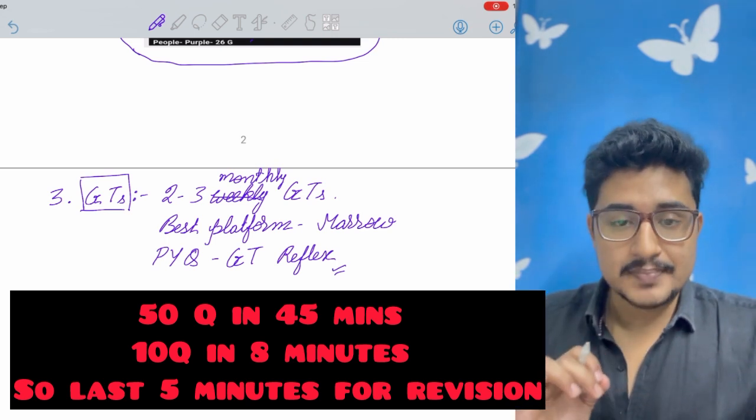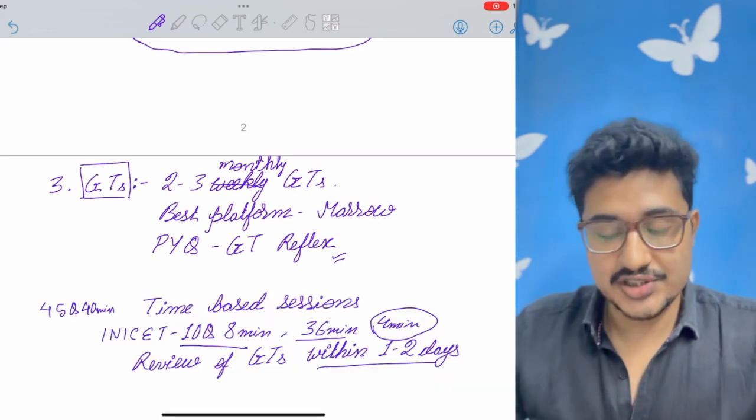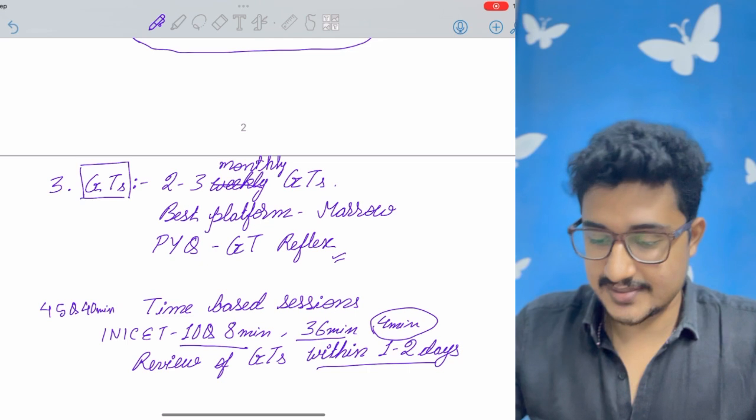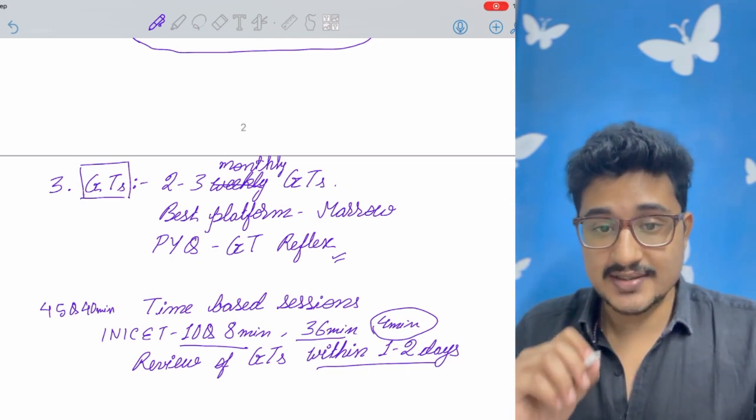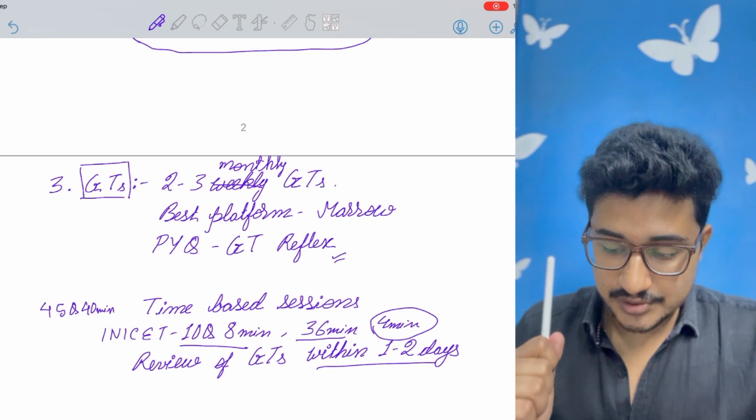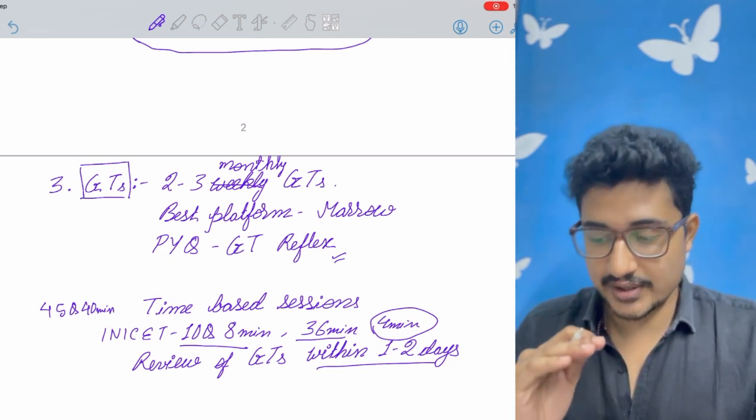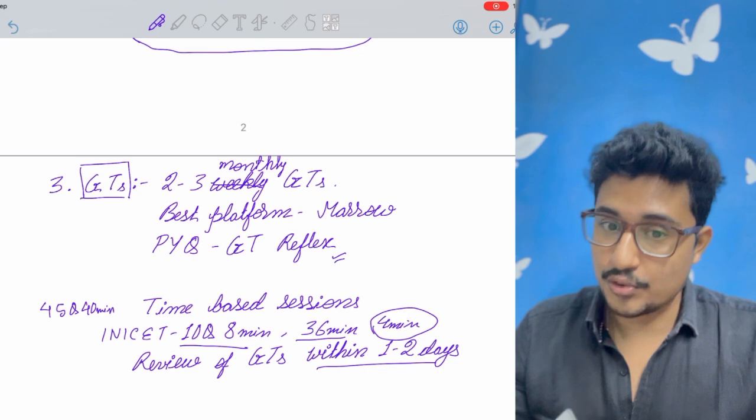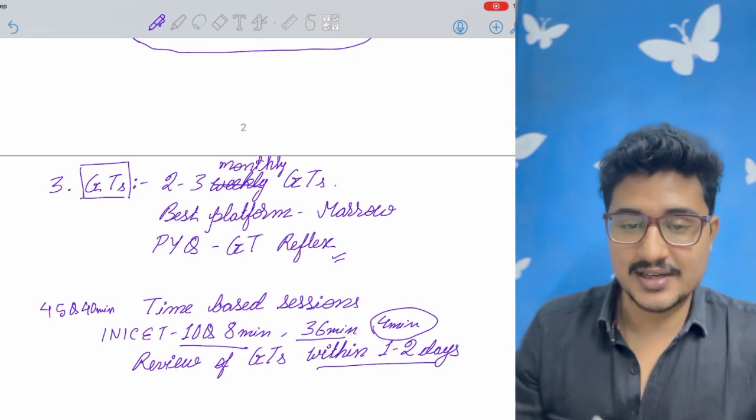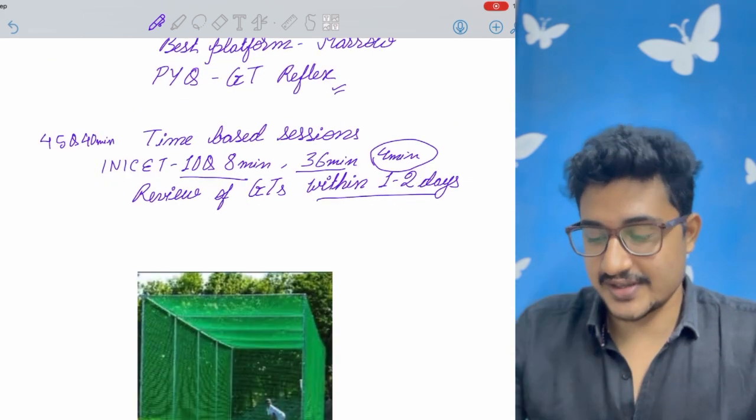INICET mein thoda time crunch hota hai. So for that reason, 10 questions in 8 minutes you should try to solve. And review the GTs within 1 to 2 days. If you are giving GT then within 1 to 2 days you have to review. So that you get to know your mistakes and it remains fresh during 1 to 2 days. And how to score well in GT and how to improve your marks in GT. In the i button a video is appearing. Go watch the video now.